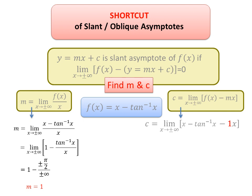Now for c, you can plug everything in the formula: m = 1 and the function. This looks like this. If you plug the limit, you will get two values of c. So we have one value of m corresponding to two values of c, so we have two slant asymptotes: y = x + π/2 and y = x - π/2.